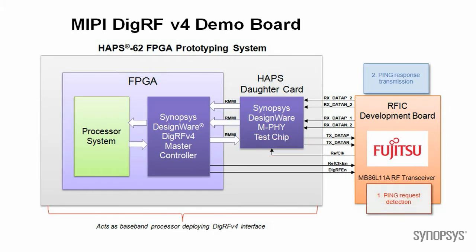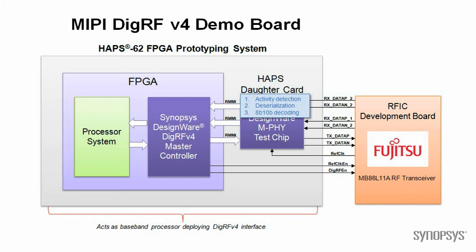The RFIC receives the serial data, decodes it, and detects the ICLC command called ping request. It subsequently schedules the transmission on the RX link of the corresponding ICLC command called ping response. The M5 detects activity in the RX link, deserializes the data, and performs 8b/10b decoding, before sending data to the DRF controller via the RMMI interface.